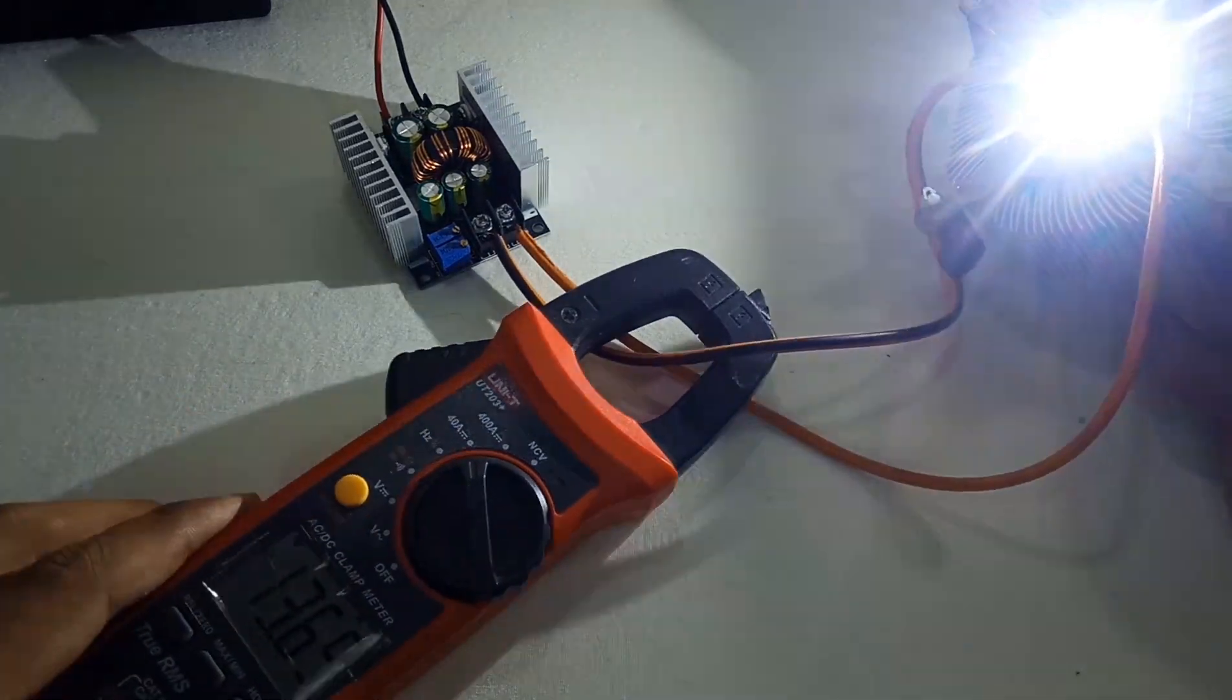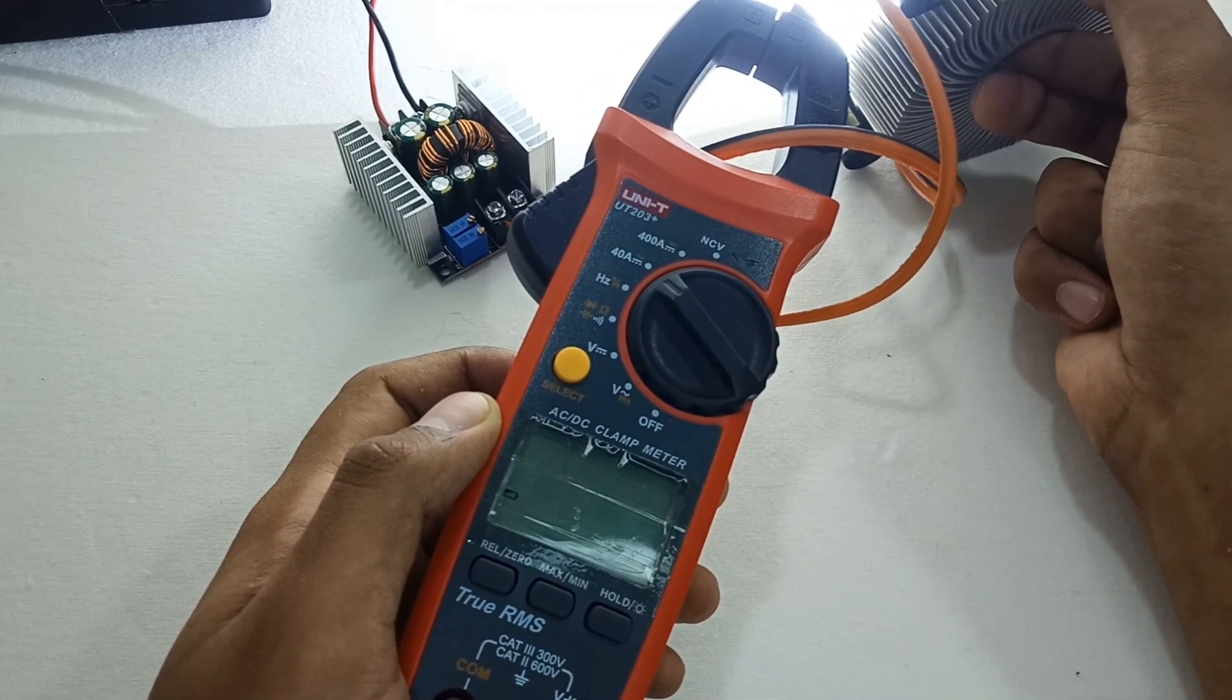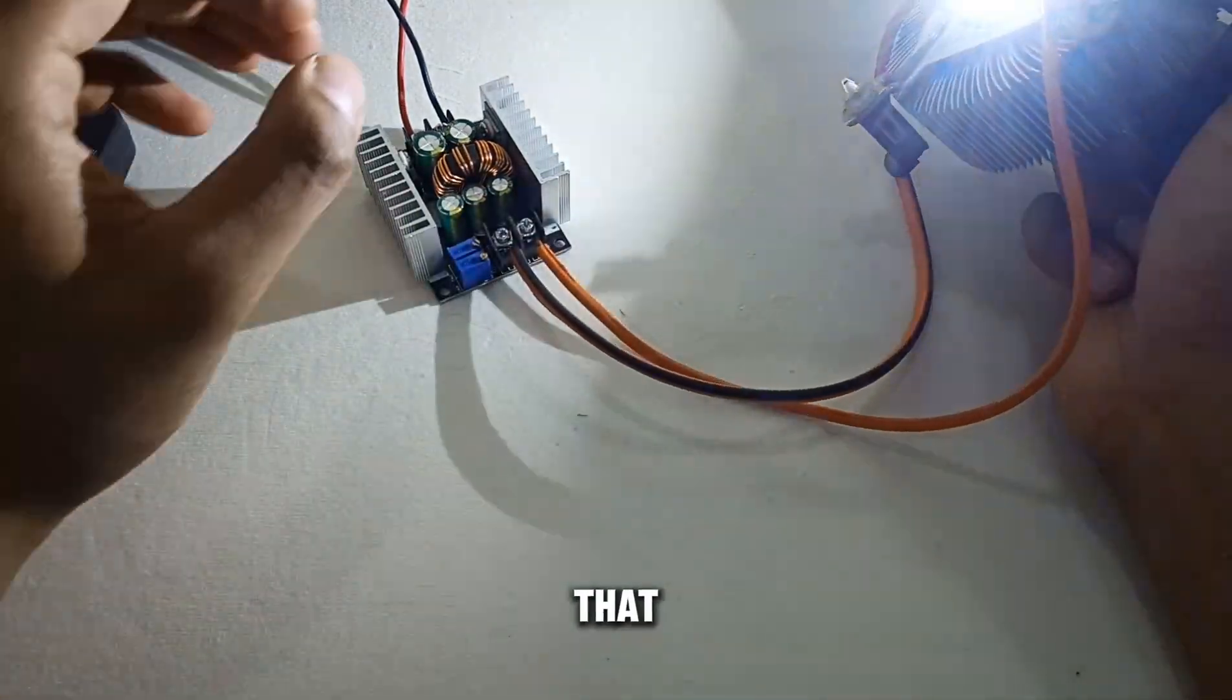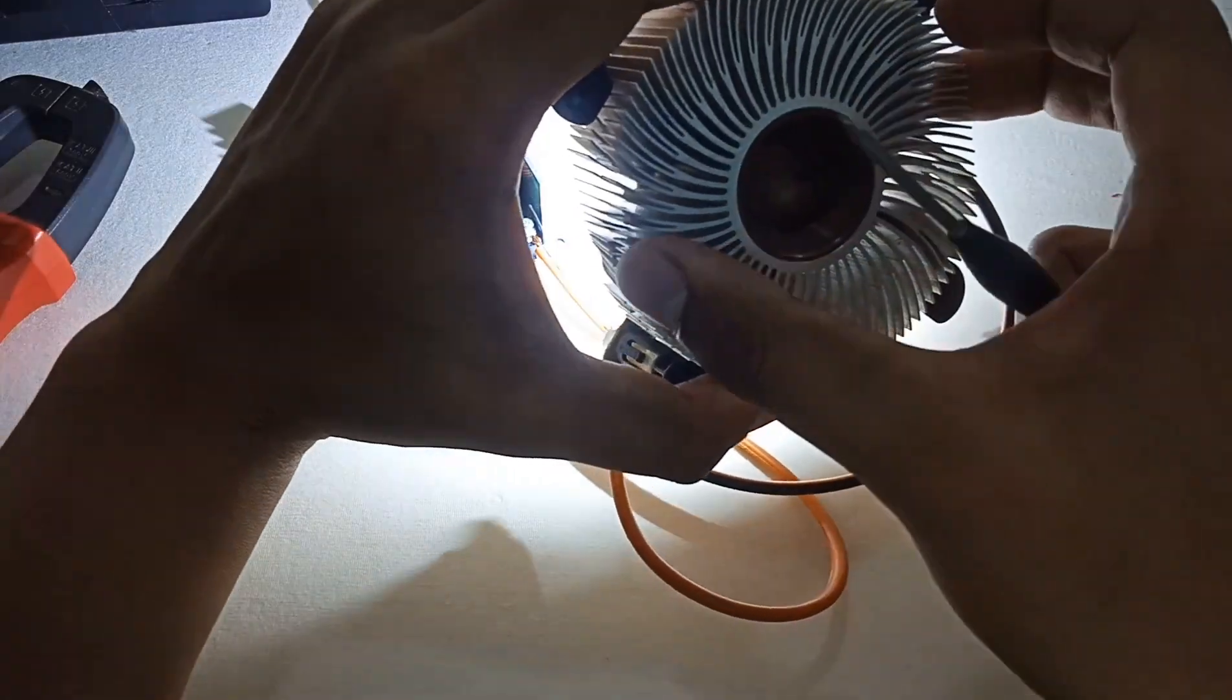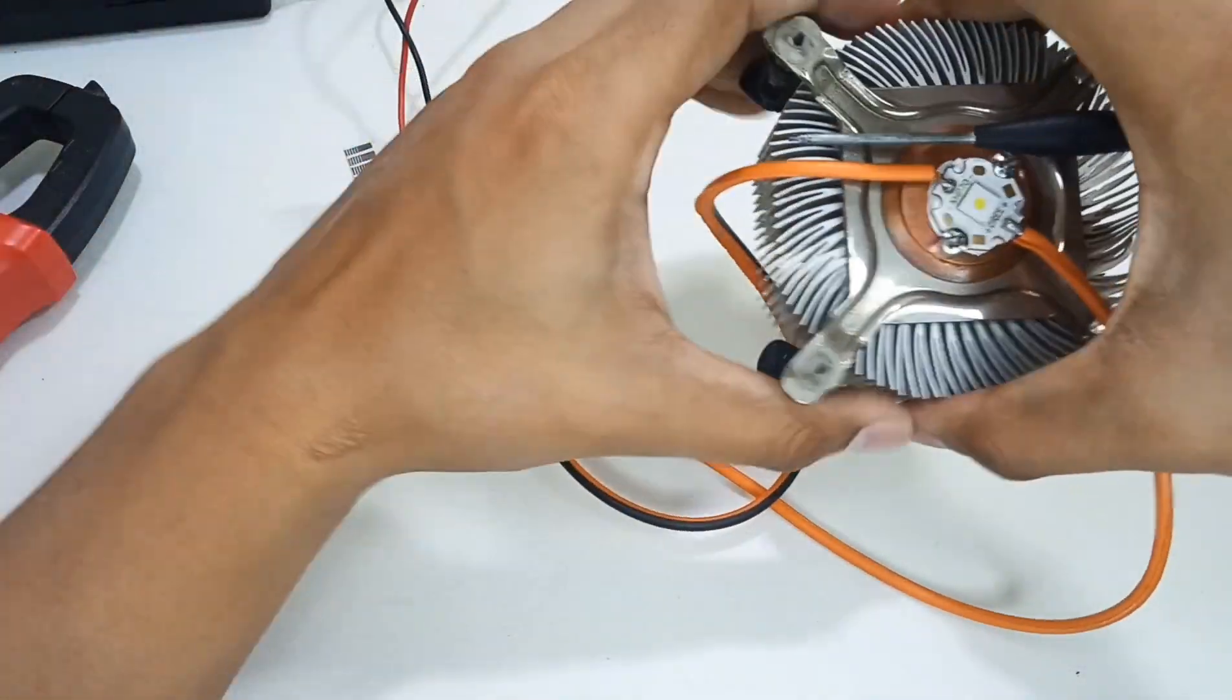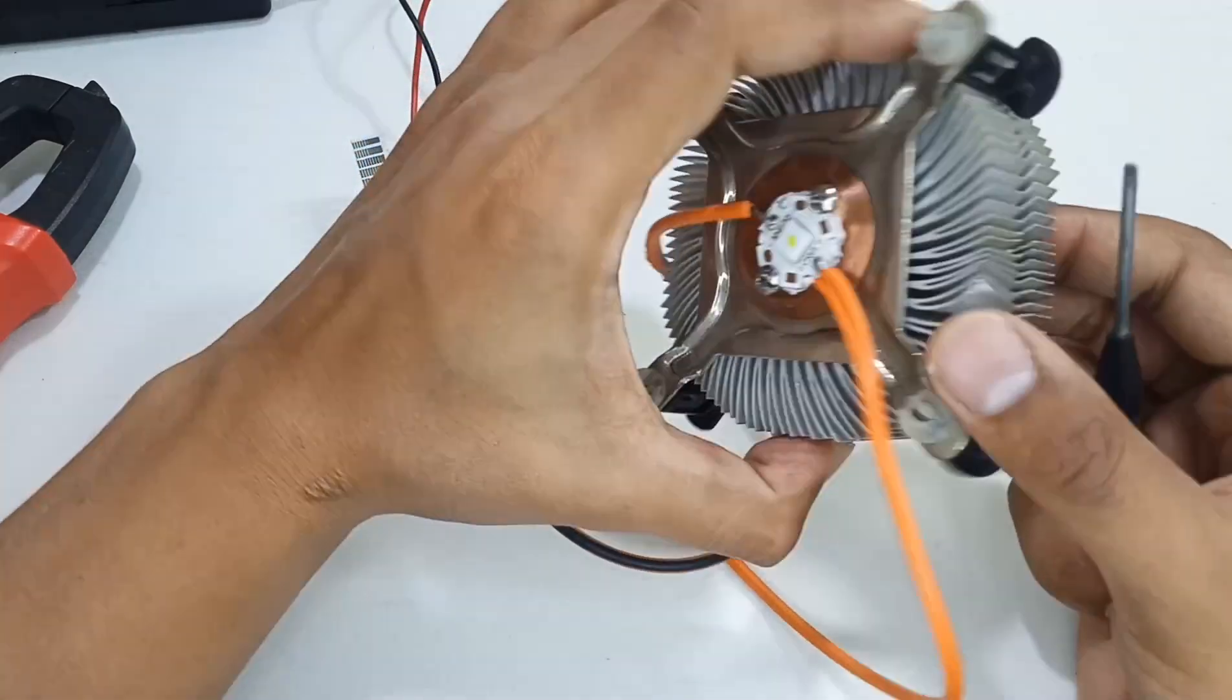As you can see, it's taking 13.7 amps now. My clamp meter is dying because of low battery, no problem, as I already showed you. The temperature is rising. For better cooling, we also have to install a big fan on the back of the heatsink.